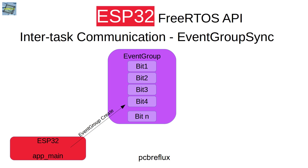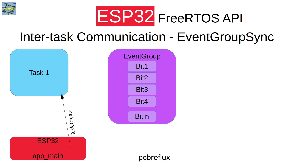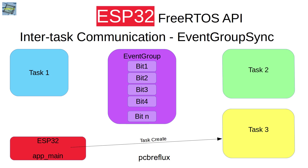In the second example, we also create an event group and then start one, two, and a third task. We want to synchronize all three tasks. All tasks do whatever they want to do, and then the first task begins listening to the event group — listening for the bit of the second task and the bit of the third task.